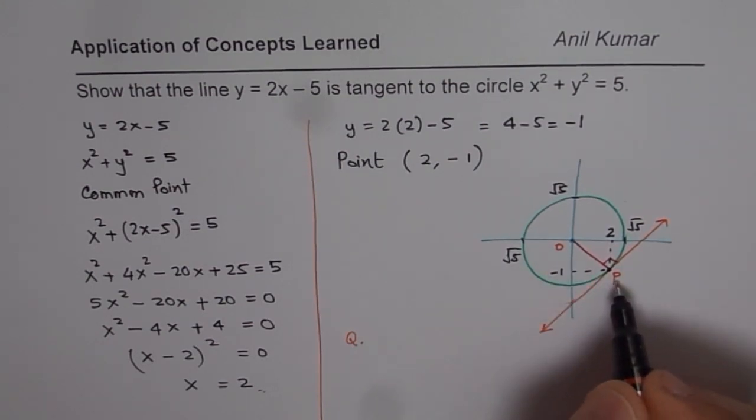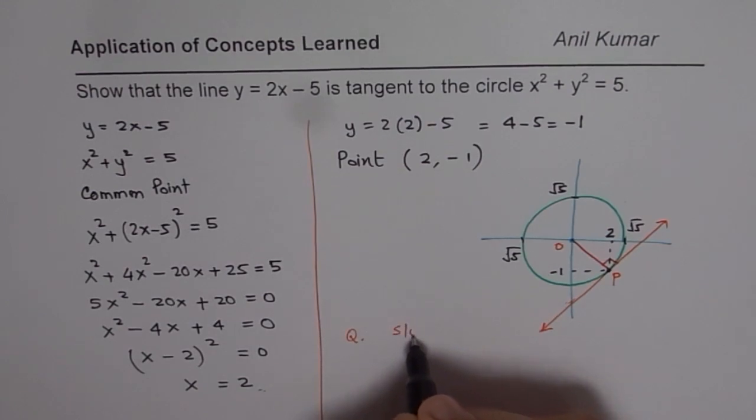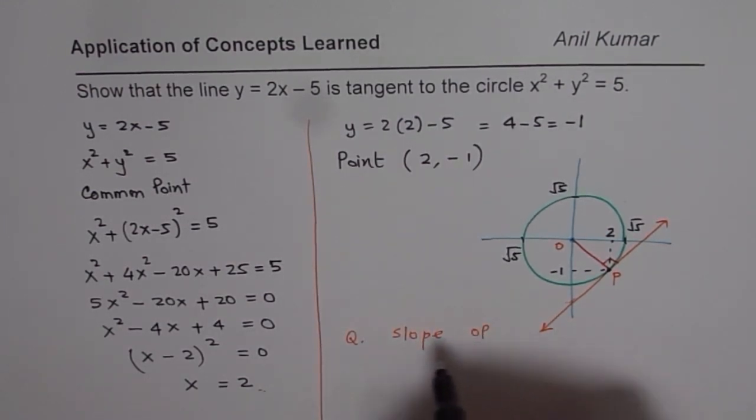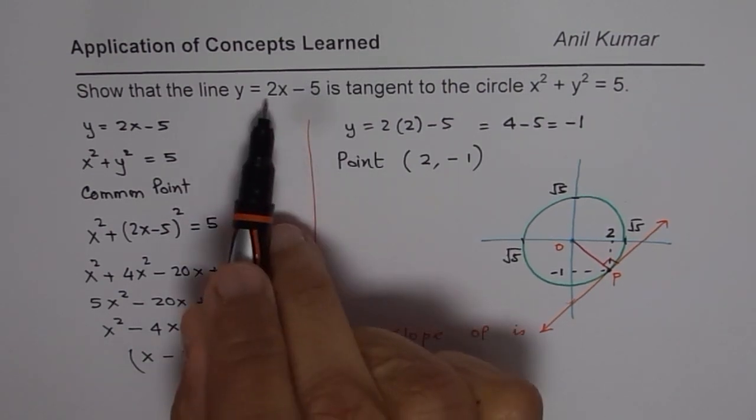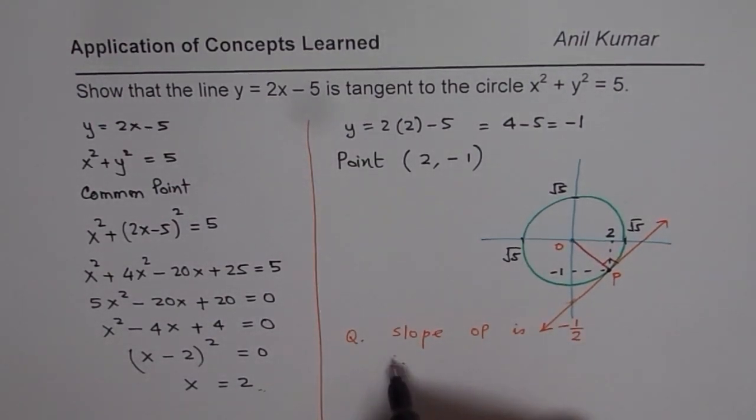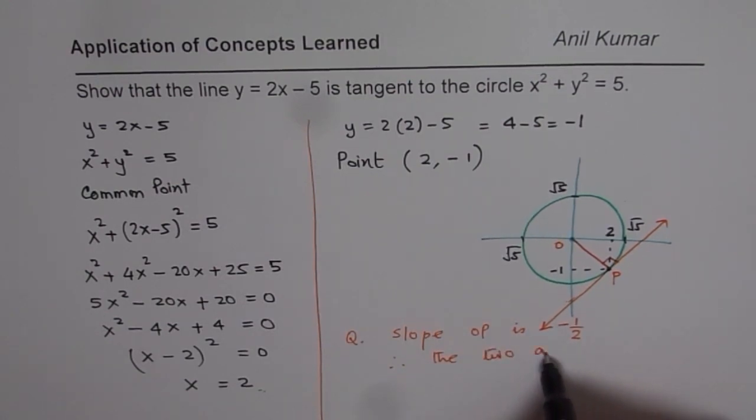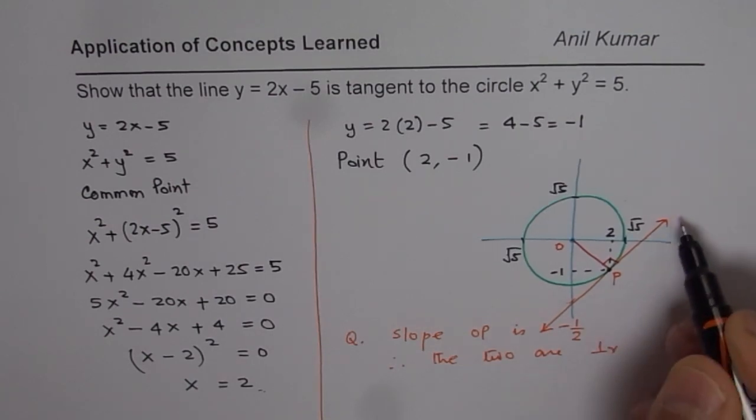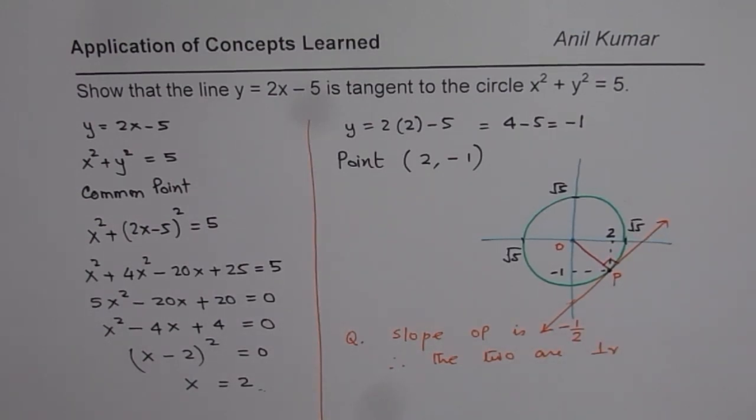So you can find the slope and say slope OP. Or you can say slope OP is, what should it be? It should be minus half, and therefore the two are perpendicular. So that is how you can also show that you can find a point of tangency, and it makes 90 degrees also. So that could be an added exercise.